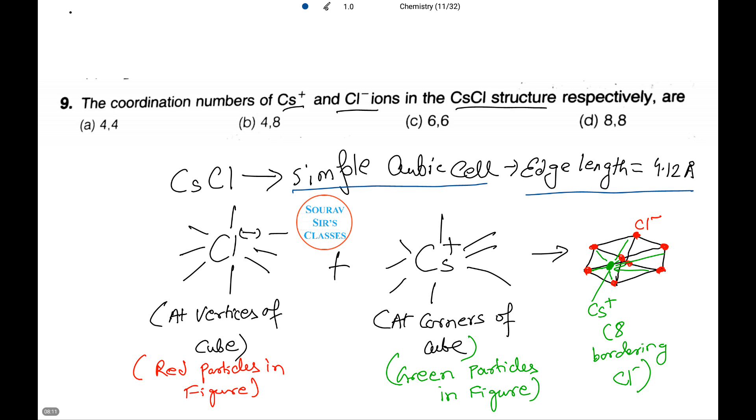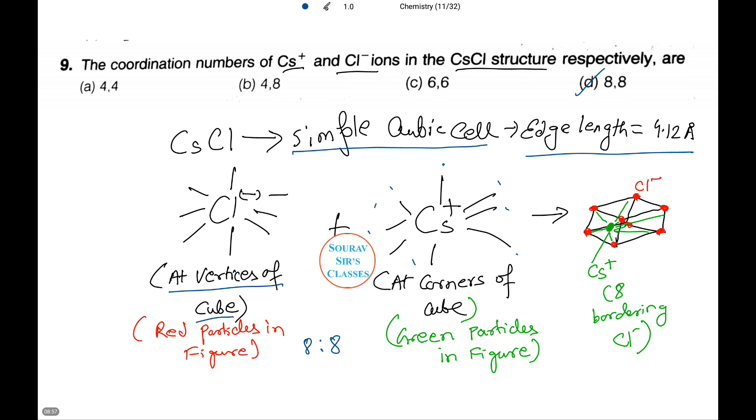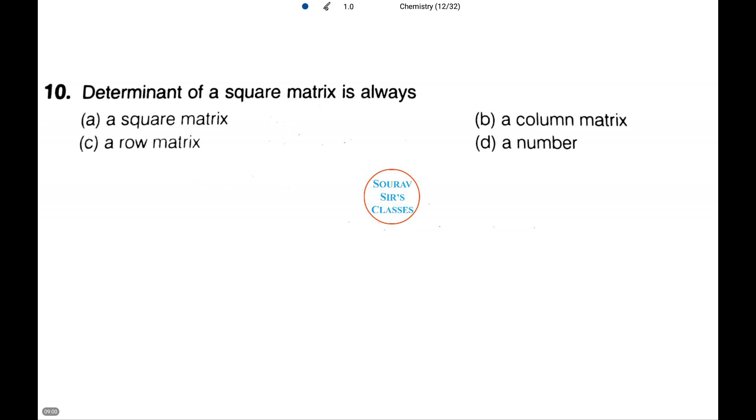Is it 4,4, 4,8, 6,6, or 8,8? Cesium chloride crystallizes in a simple cubic cell form. Chlorine has eight neighboring opposite charges at the vertices of the cube that I've marked in red in the following figure. Similarly, cesium also has eight neighboring opposite charge particles, which is marked as green in the given diagram. Thus the ratio is 8:8, which comes to be number D.